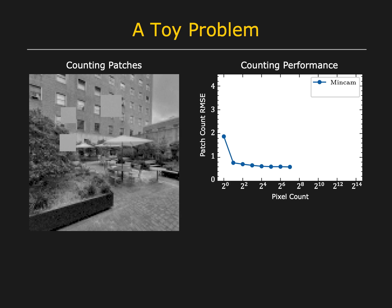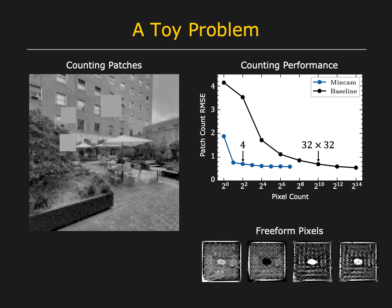A minimalist camera with just four freeform pixels achieves the same performance as a traditional camera with 32x32 pixels. Here are the four freeform pixels needed to solve the task.